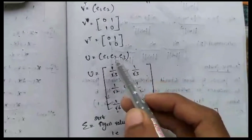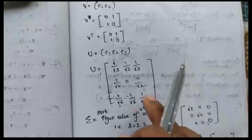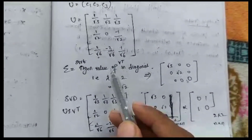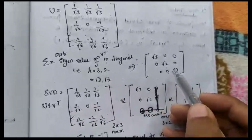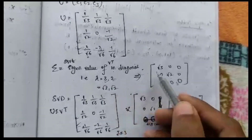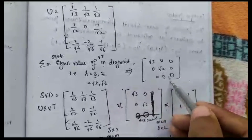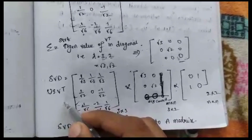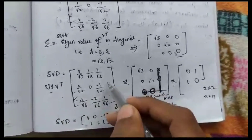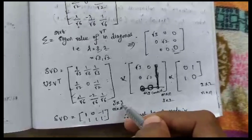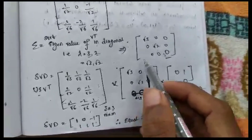We substitute the normalized vectors e1, e2 into the Vᵀ matrix and transpose it. Similarly for the U matrix we use e1, e2, e3. The Σ matrix is filled with the square roots of the eigenvalues of Vᵀ — since the eigenvalues are 3 and 2, we apply square roots to get √3 and √2 on the diagonal.